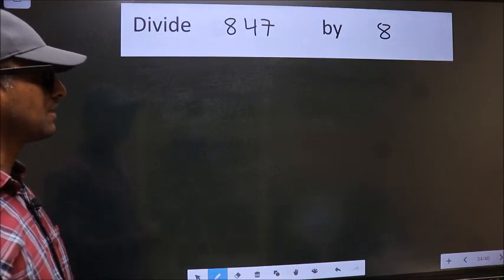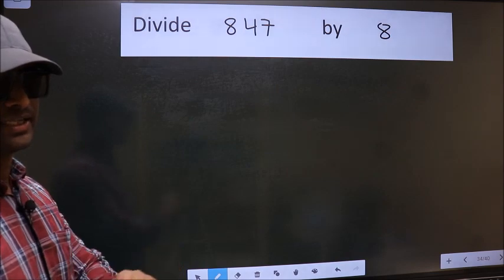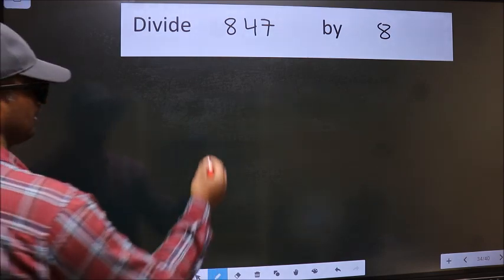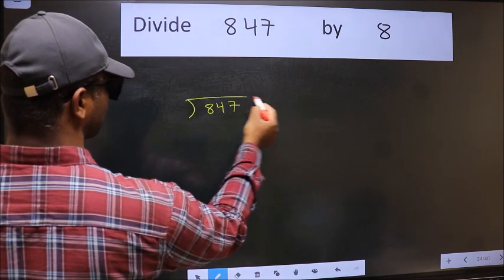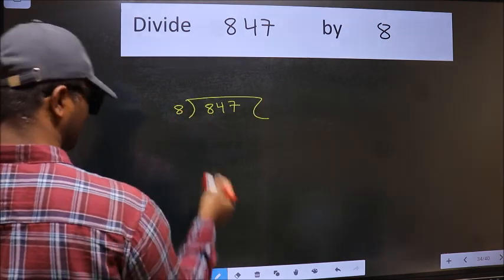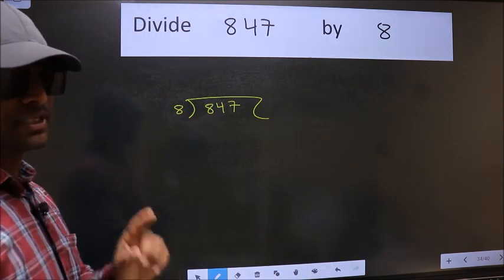Divide 847 by 8. To do this division, we should frame it in this way. 847 here and 8 here. This is your step 1.